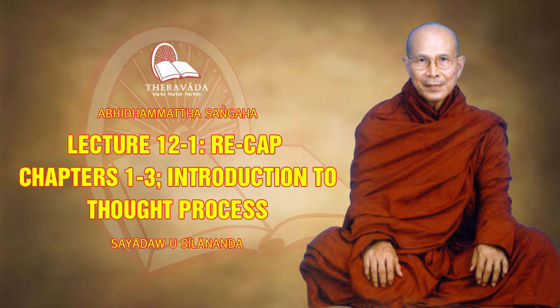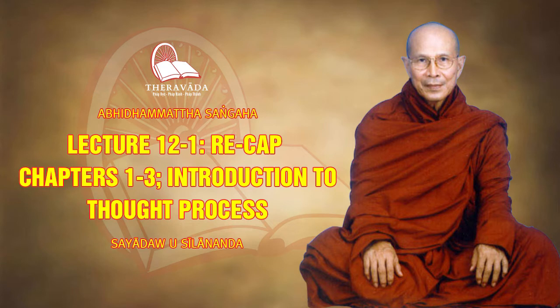Arupavacara cittas mostly arise in the realm of brahmas who have no physical body. In the realm of immaterial brahmas, there are only cittas and cetasikas — consciousness and mental factors. Up to arupavacara, these are called mundane cittas: akusala, ahetuka, kamavacara, rupavacara, and arupavacara all belong to the mundane sphere.